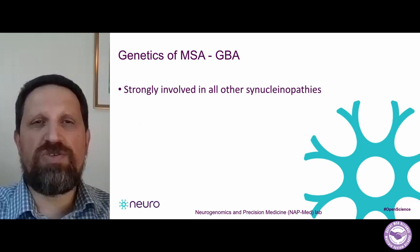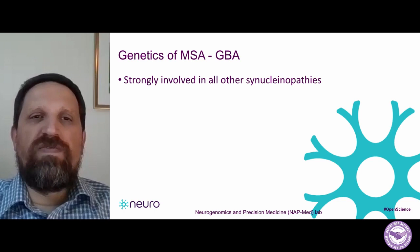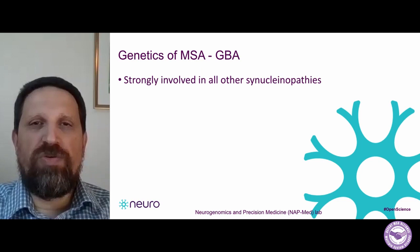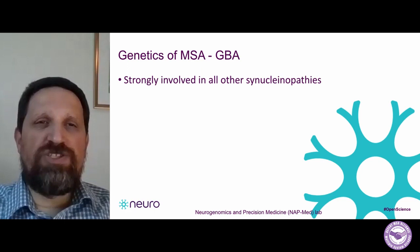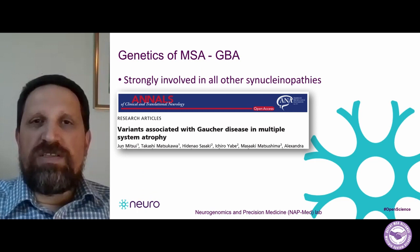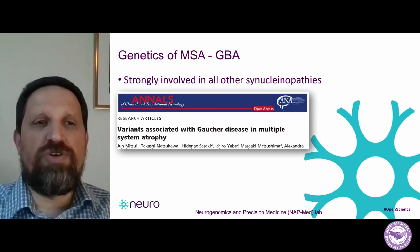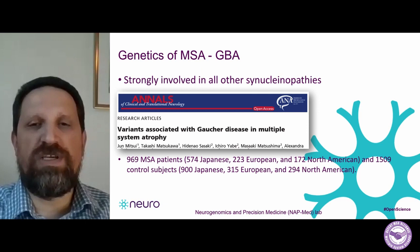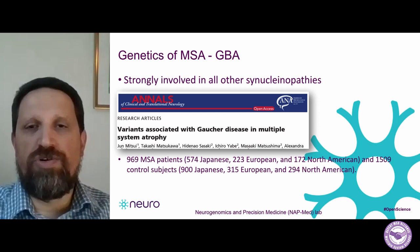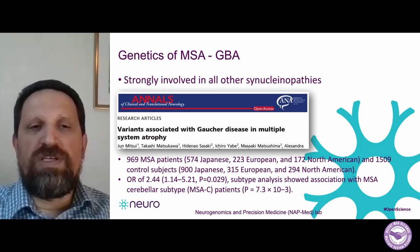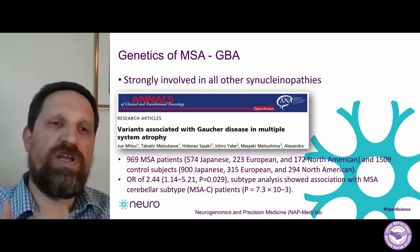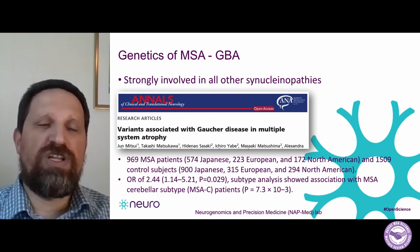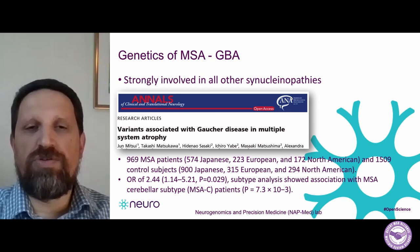GBA is already known to be involved in all other synucleinopathies — Parkinson's disease, dementia with Lewy bodies, REM sleep behavior disorder. This is probably the largest study performed on GBA mutations in MSA, which included 969 MSA patients from different ethnicities and over 1,500 healthy controls. The authors found that people with GBA mutations have slightly higher risk, with an odds ratio of 2.4 — meaning about a two-fold risk to develop MSA compared to those without mutations in this gene. The authors also showed that GBA mutations might be associated more with the cerebellar type of MSA.